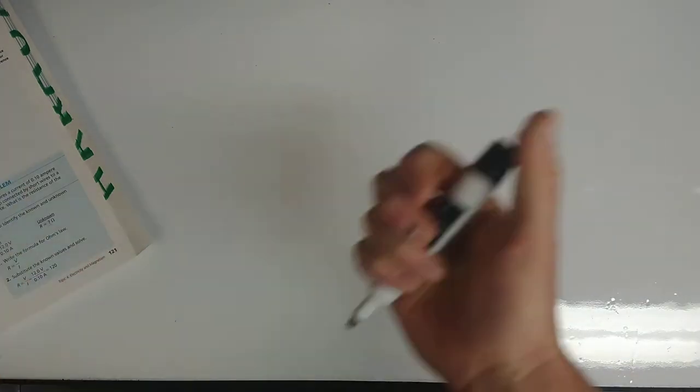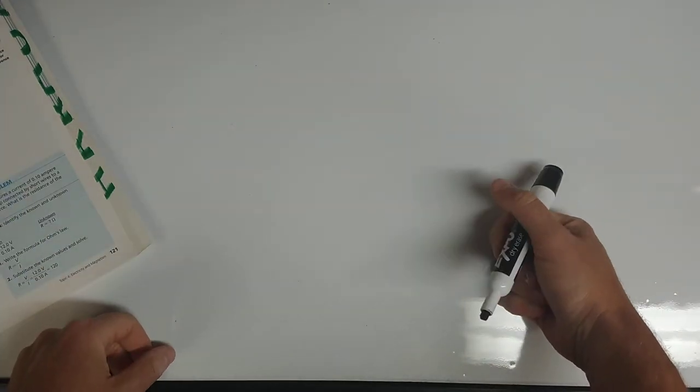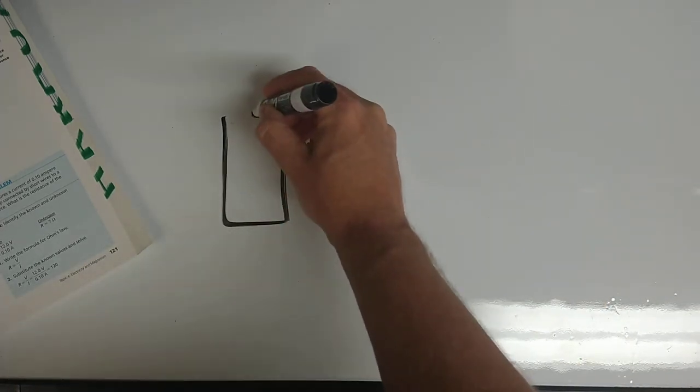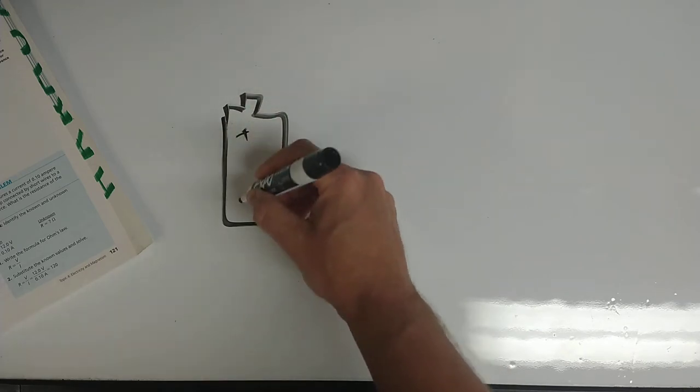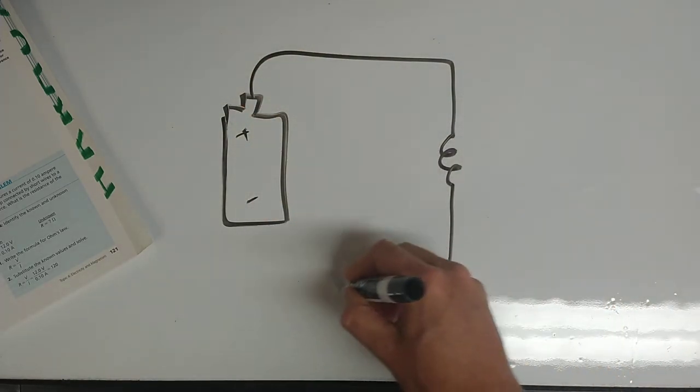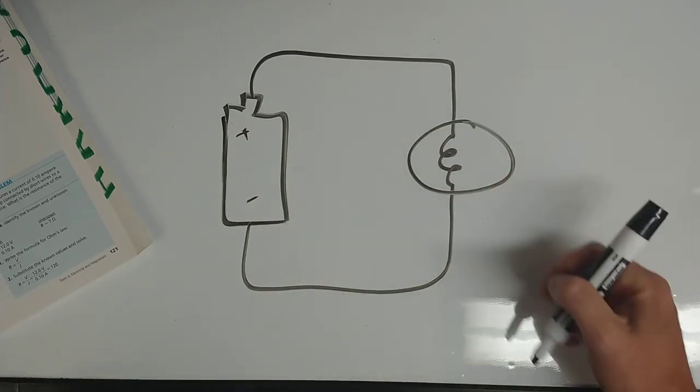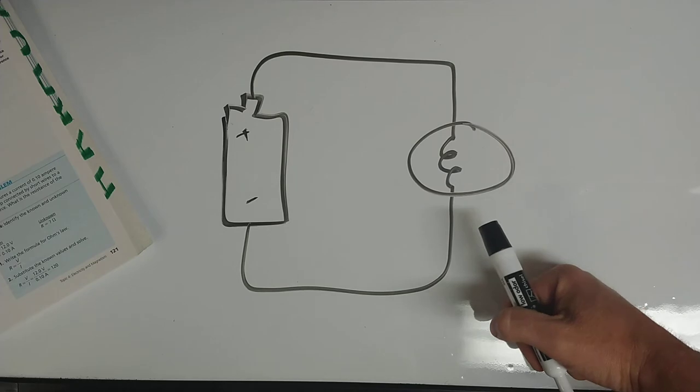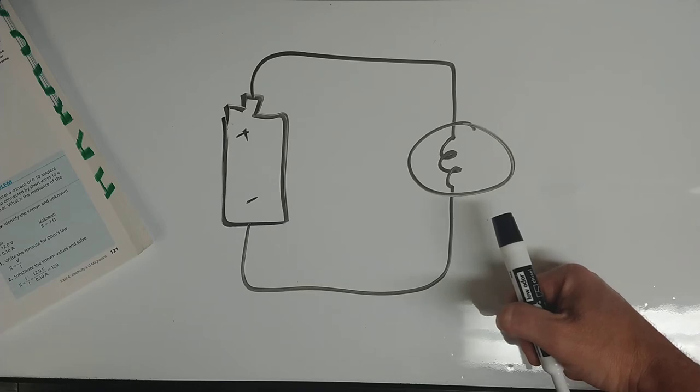So a circuit is a collection of a power source, electricity source, like a battery - good old battery, positive, negative - some wires, and some kind of circuit element. So a circuit element is a light bulb, or it could be something called a resistor, which I'll show you at school. Anything you can plug in is essentially a circuit element, right?